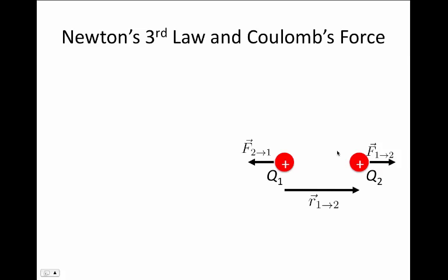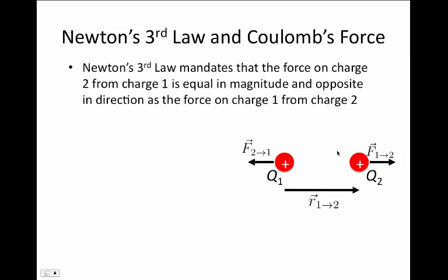Let's revisit what Newton's third law says. Newton's third law asks that if charge number one exerts a force on charge number two, then charge number two must exert an equal and opposite force on charge number one. In other words, if this is the force arrow acting on number two from number one, then we must find a way that Coulomb's force law creates a force on number one from number two that has the same magnitude, but the opposite direction.